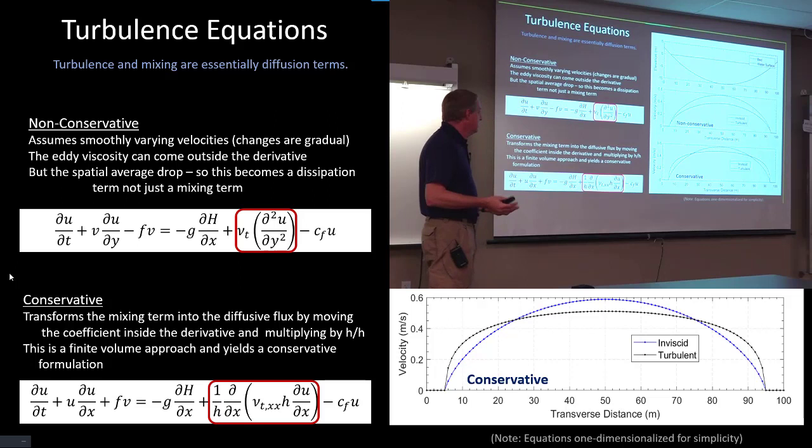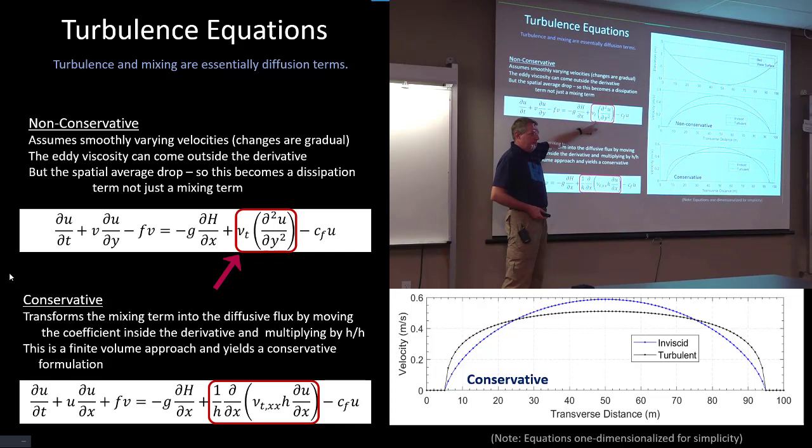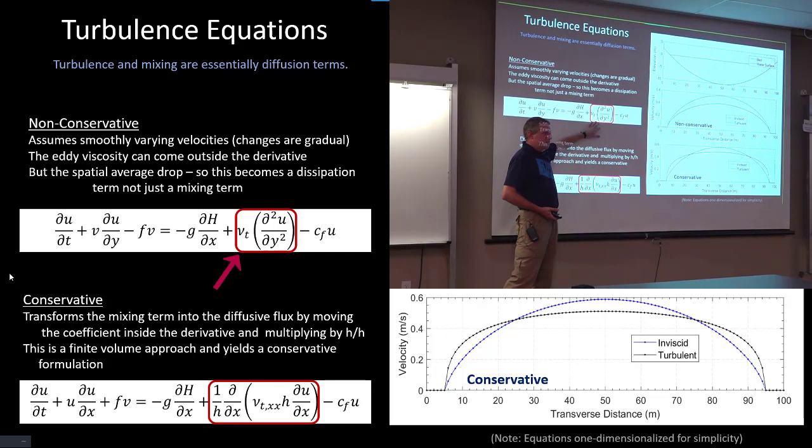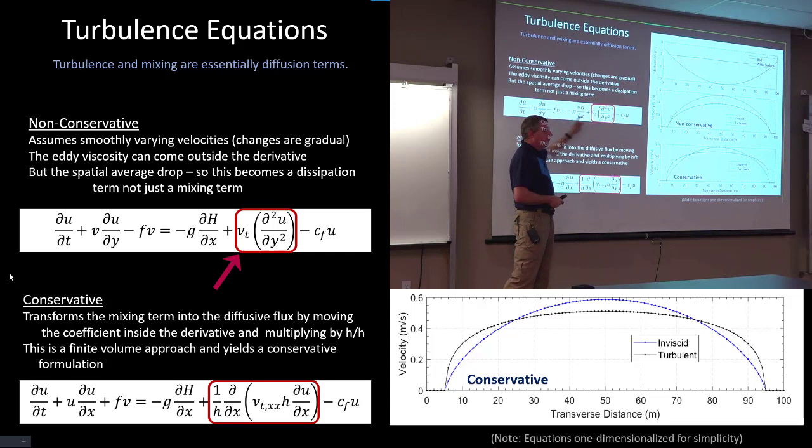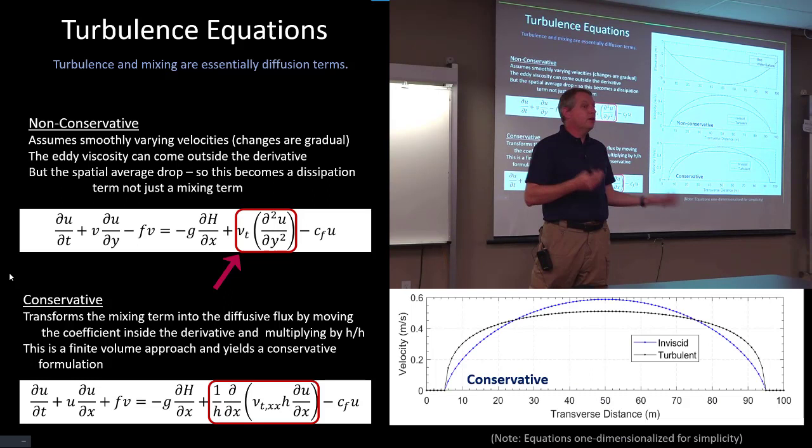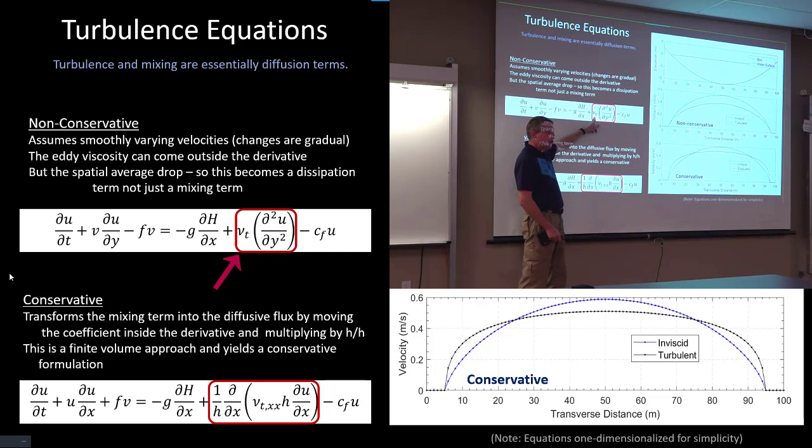But this is our turbulence term here. Advection's over here. Temporality's over here. Here's turbulence and mixing. Those of you who are familiar with governing equations, what does that term look like? It's the second derivative. The first derivative is advection. The second derivative is a curvature. Which means that it's a diffusion term. The diffusion term in the sediment transport looks like this. It's some diffusion coefficient times the curvature or times the second derivative.